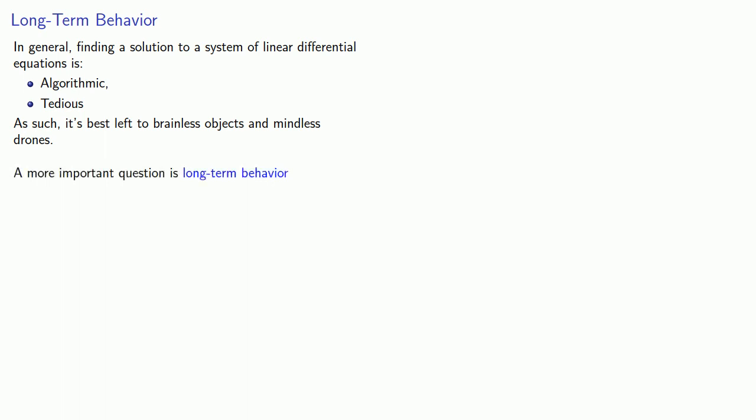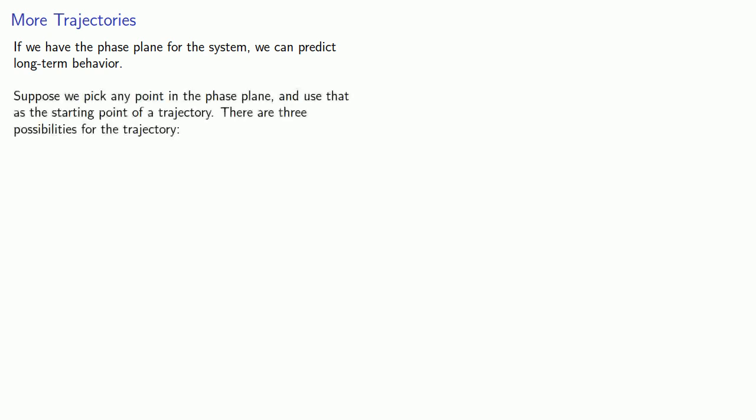A more important question is long-term behavior. So let's consider that if we have the phase plane for a system, we can predict long-term behavior. Suppose we pick any point in the phase plane and use that as the starting point of a trajectory. There are three possibilities for the trajectory.